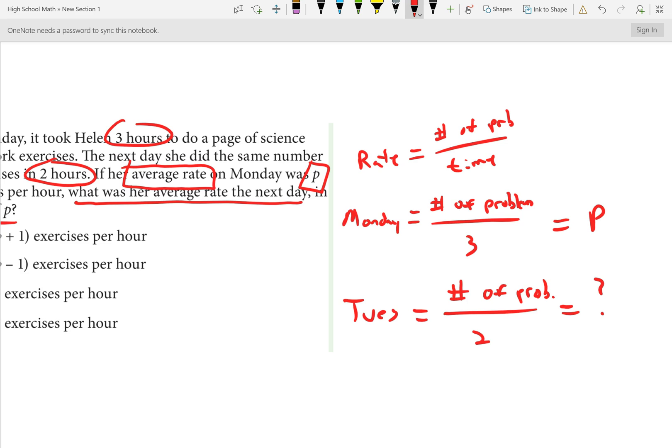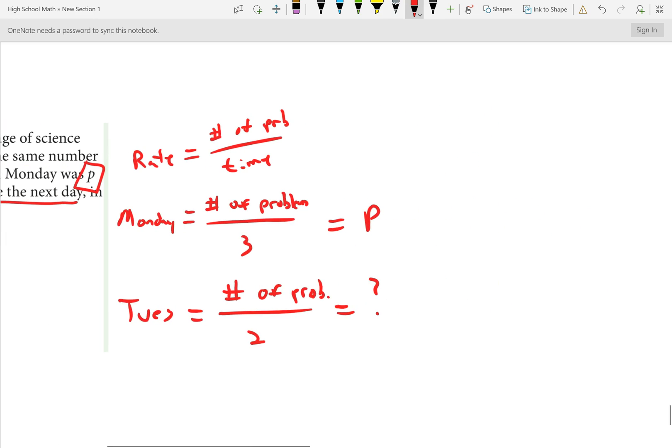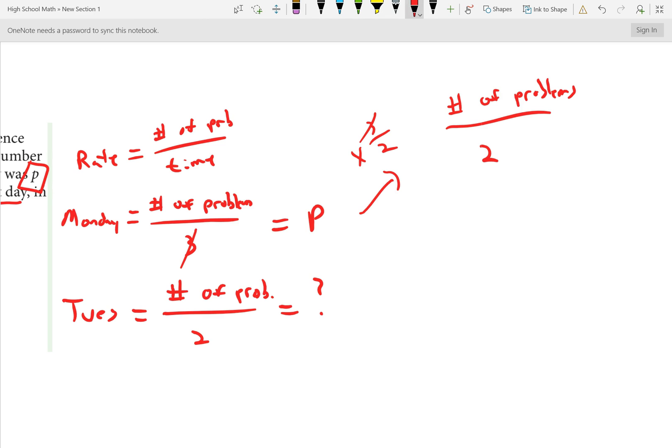If I want this left-hand side to look like this, what do I need to multiply by? I want to make this three look like a two. Well, I need to multiply by three over two. If you multiply this by three over two, this three will cancel with this three to leave two in the bottom. So, what I have on the left-hand side is number of problems over two. And that is the left-hand side of my Tuesday equation.